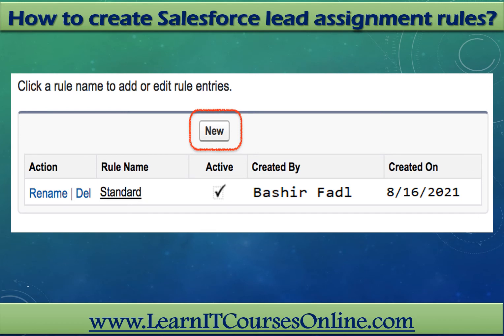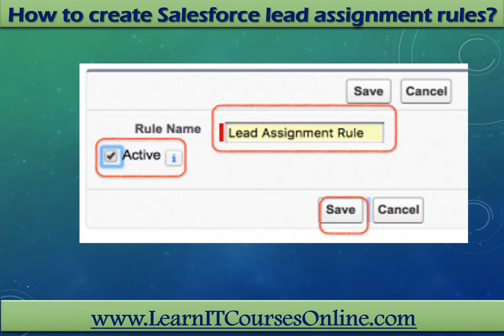We'll click the New button to create a new Salesforce lead assignment rule. This is where we enter the rule name, then the assignment rule must be activated as shown, and then click the Save button. There is only one active rule in Salesforce at any given time. If we create a new assignment rule, the first standard rule will be automatically deactivated.